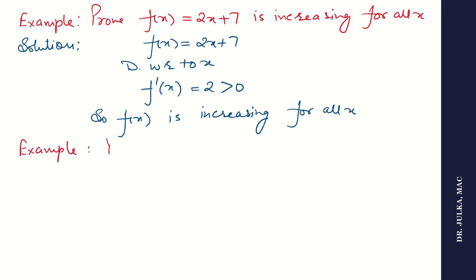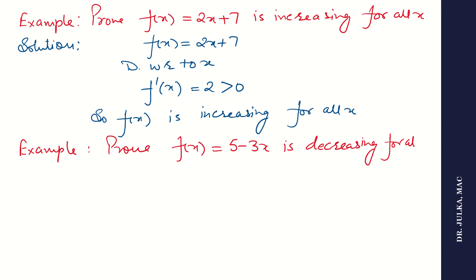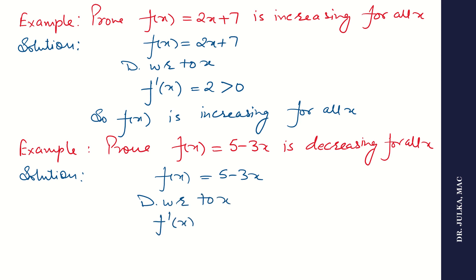Next example: prove that f(x) equals 5 minus 3x is a decreasing function for all x. Please remember, if the first derivative is negative, the function is said to be decreasing. Here the function is 5 minus 3x. Differentiating with respect to x, the first derivative is minus 3, which is less than 0. So the function is decreasing for all x.